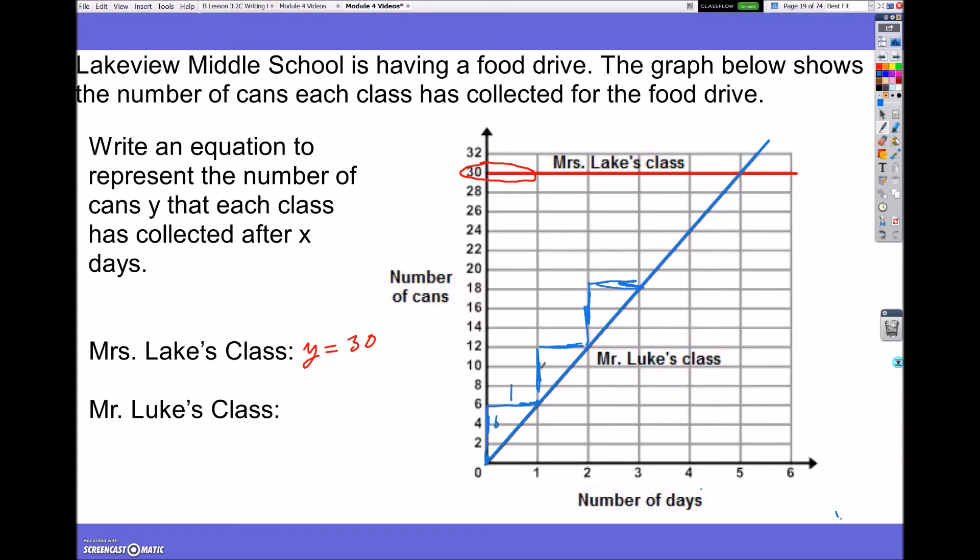So, its rise over run is up 6 over 1, up 6 over 1. So, his equation would be y equals 6x, and since it started at the origin, that would be my b value, that would be plus b. So, his equation is y equals 6x.